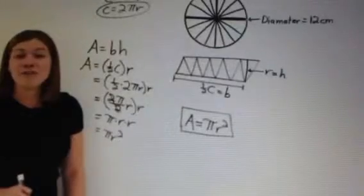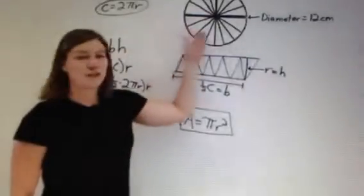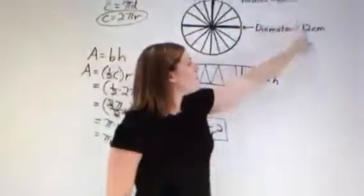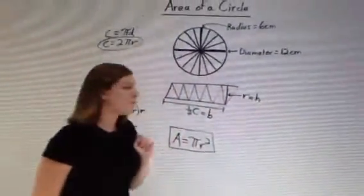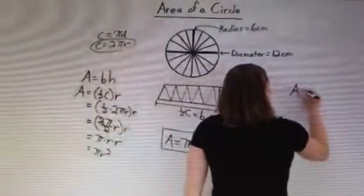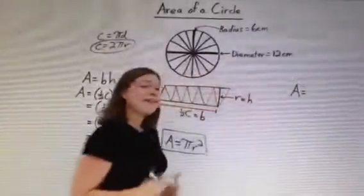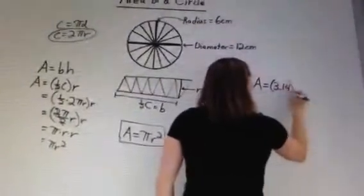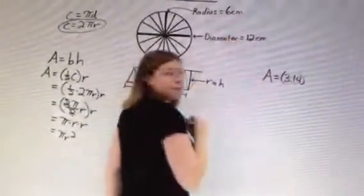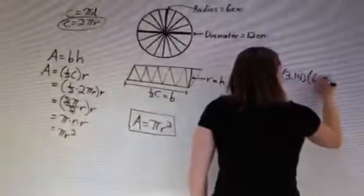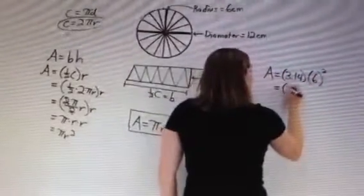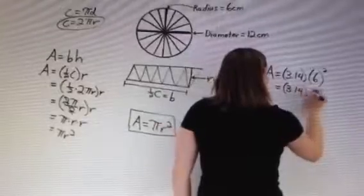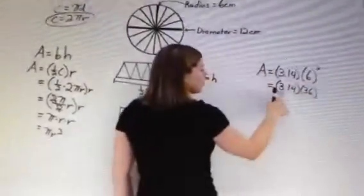Now that we've derived this formula, let's use it to find the area of a circle with a radius of 6 centimeters and a diameter of 12. Area = πr². Using 3.14 for pi and r = 6 centimeters, we square 6 to get 36, then multiply 3.14 × 36 to get 113.04.